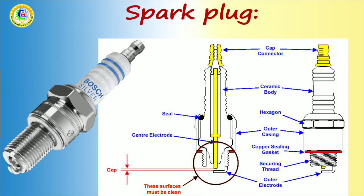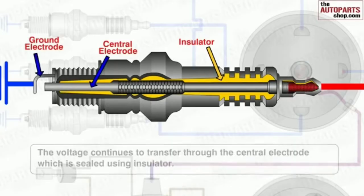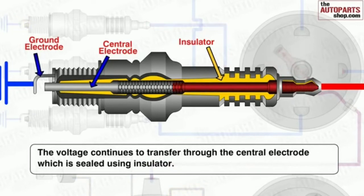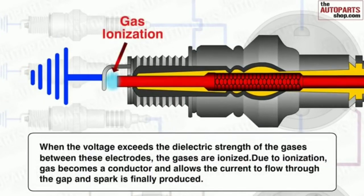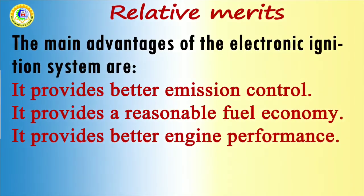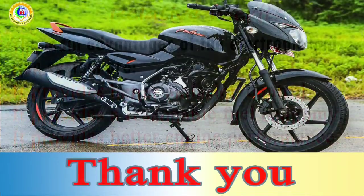The main function of a spark plug is to conduct the high potential from the ignition system into the combustion chamber. It provides the proper gap across which a spark is produced by applying the high voltage to ignite the mixture in the combustion chamber. The main advantages of the electric ignition system are: it provides better emission control, reasonable fuel economy, and better engine performance. Thank you to all my viewers.